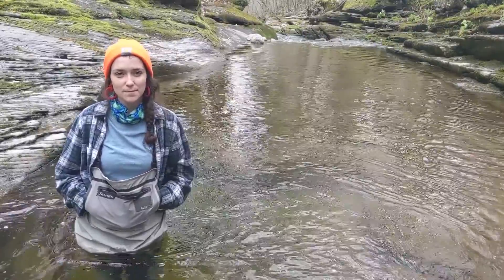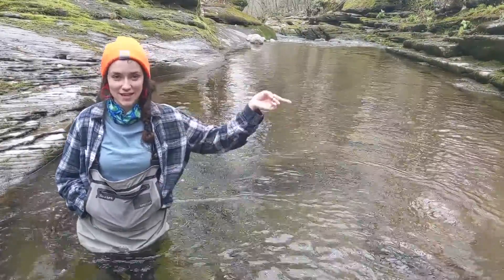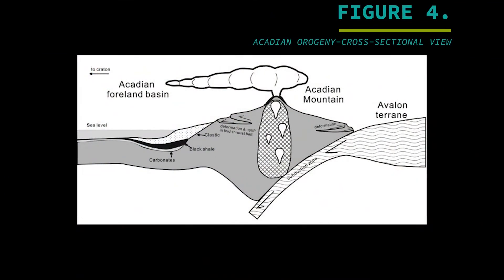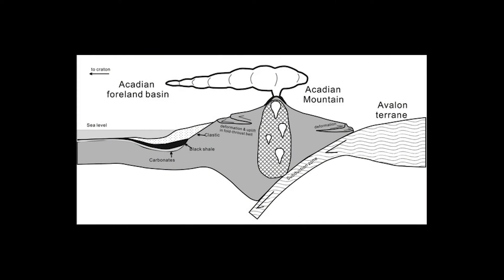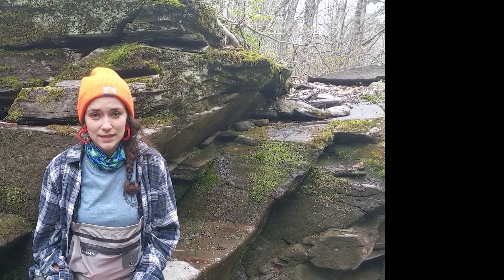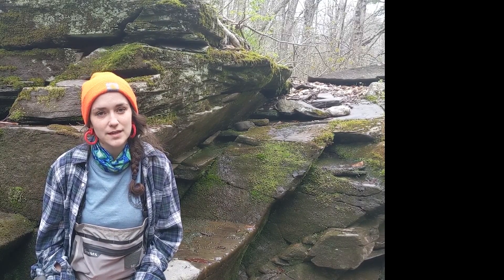During the Devonian Period, a mountain-building event occurred known as the Acadian Orogeny. An orogeny is a process where a section of the Earth's crust undergoes lateral compression, the crust deforms, and a mountain range is created. Basically, an orogeny is any mountain-building event.